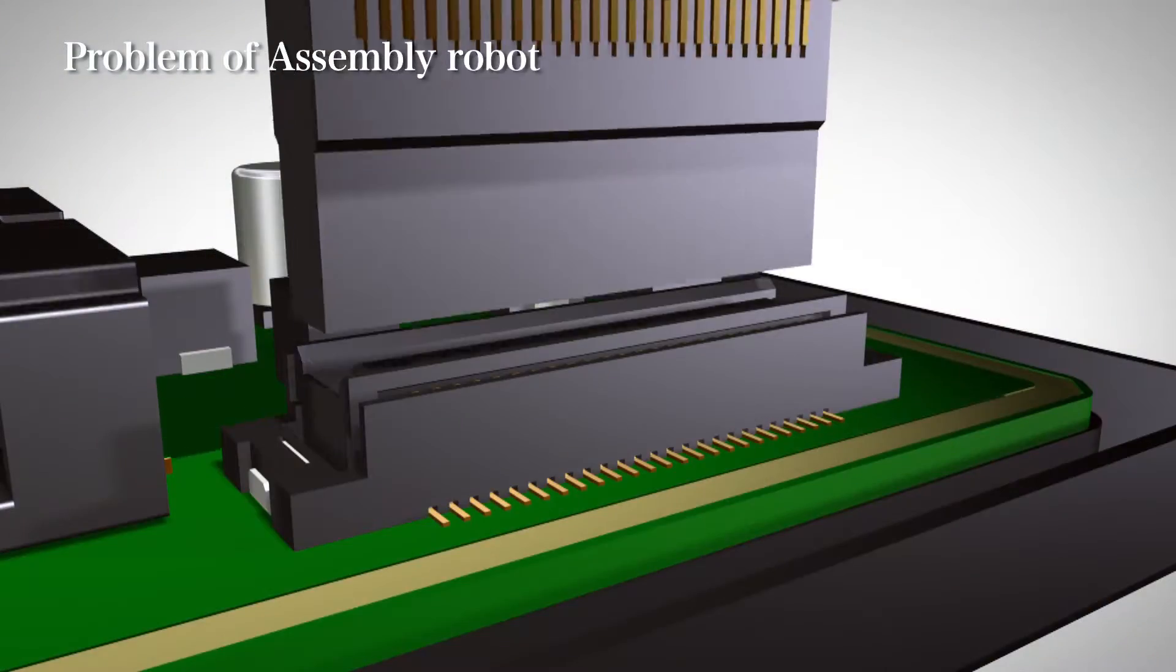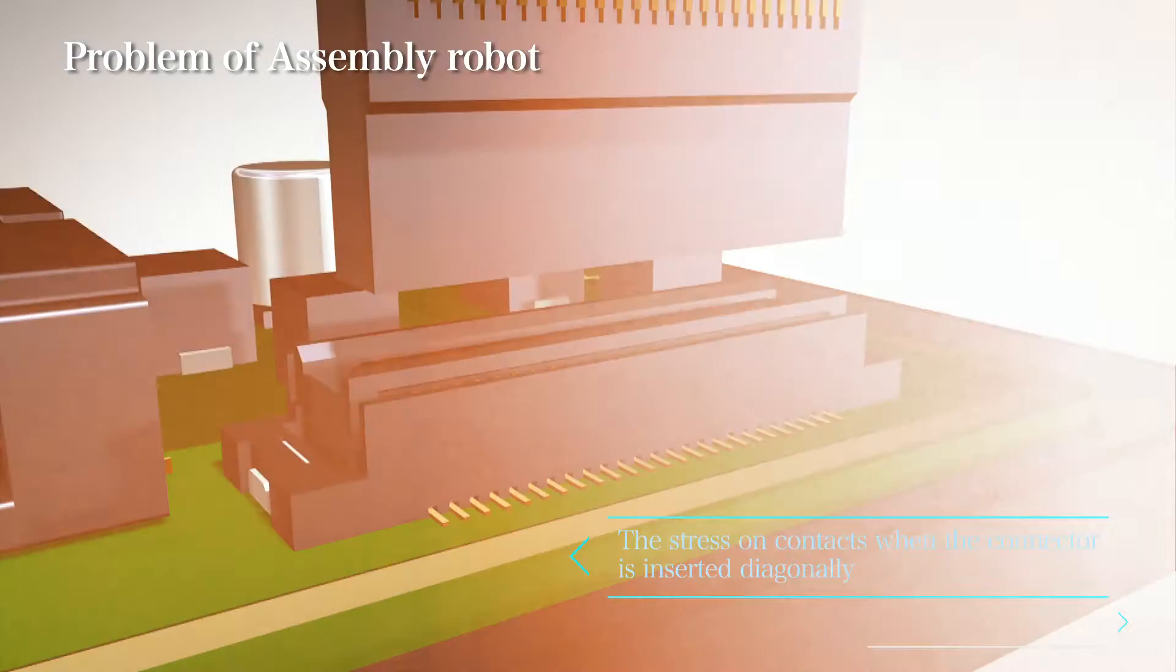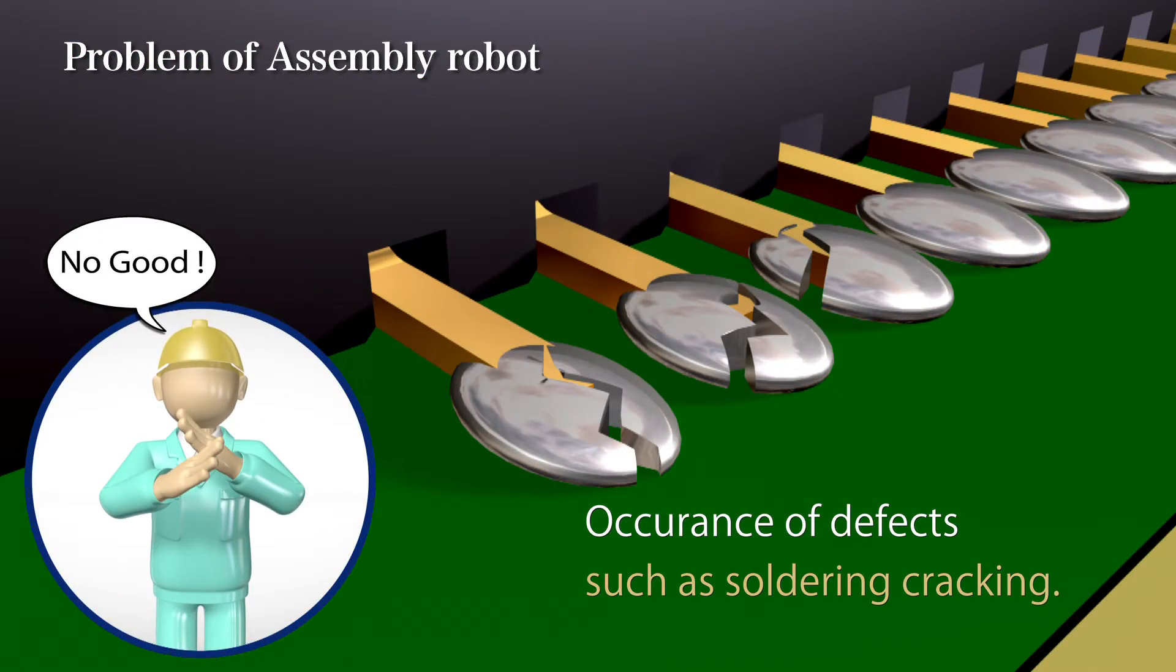In robot assembly, there are some cases where connectors are inserted diagonally, and the load is put on the soldering area, which causes soldered cracking.